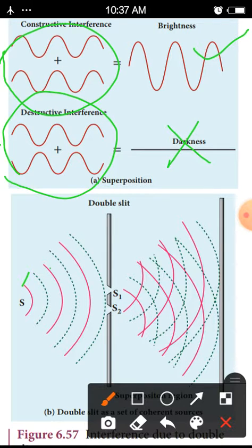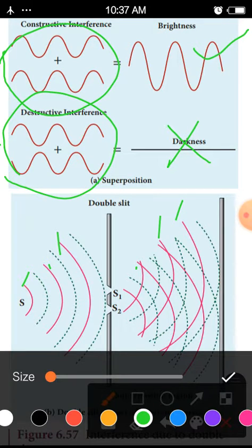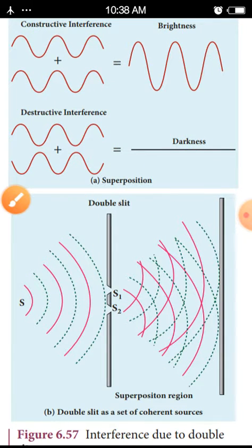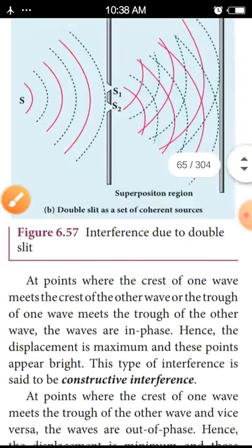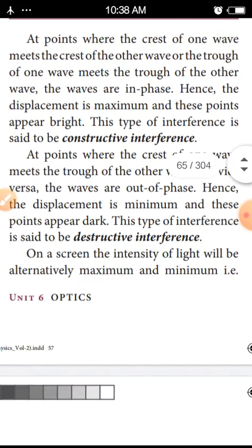What is the crest? It is the crest. At the point where the crest of one wave meets the crest of the other wave, the waves are in phase, hence the displacement is maximum, and the points appear bright.